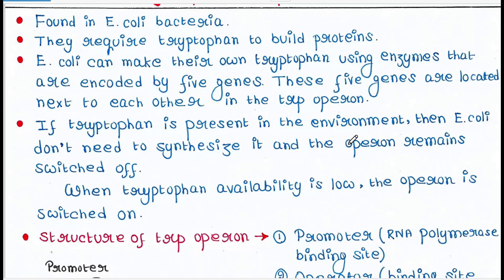But when tryptophan availability is low — suppose tryptophan is absent from the bacterial media — at that time they require tryptophan to make their proteins, so the operon is switched on.